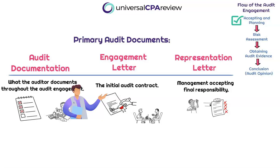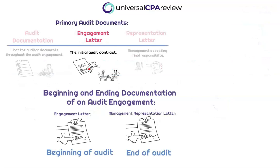Let's start by talking about the engagement letter. It is going to be written and signed at the beginning of the engagement — it only makes sense to start here — whereas the management representation letter will be written and signed at the end of the engagement when conclusions related to the audit report have been reached.